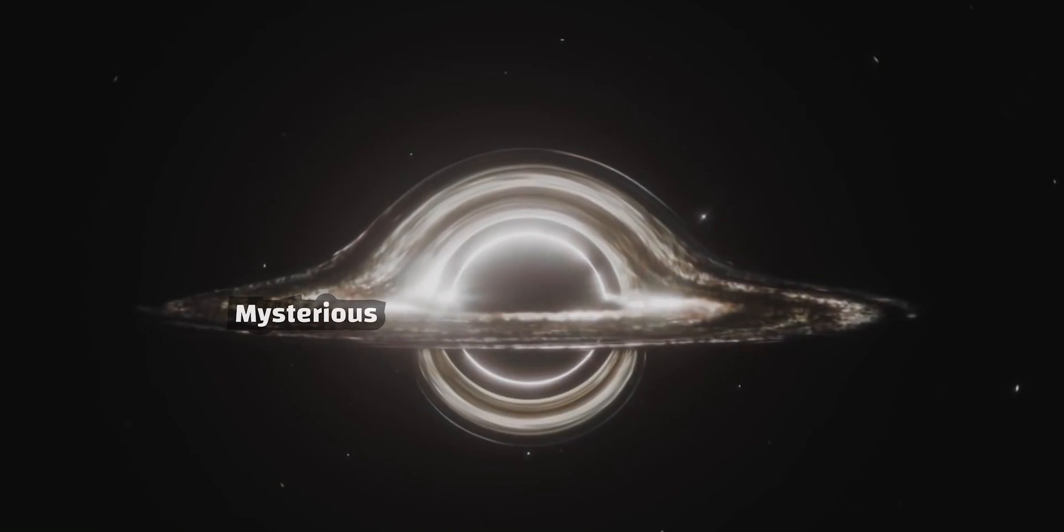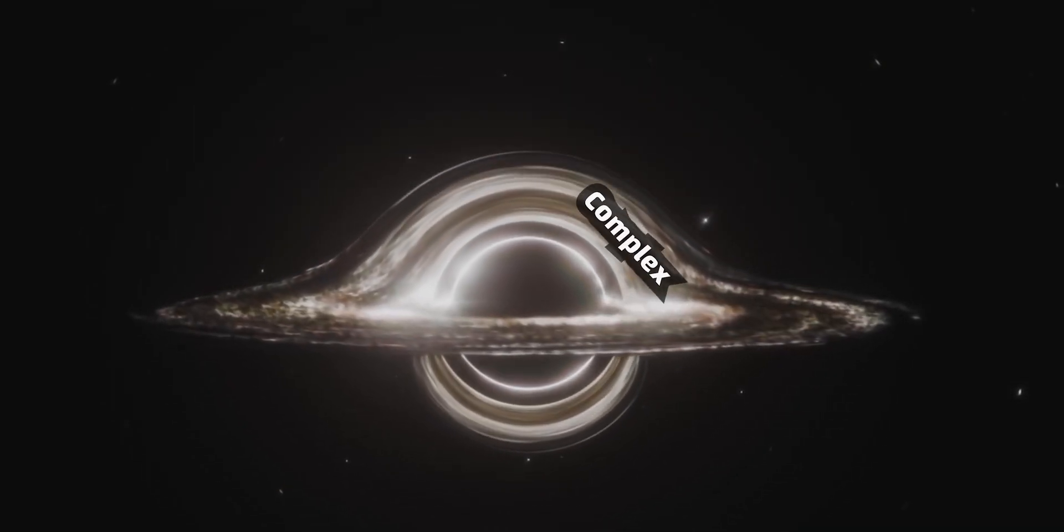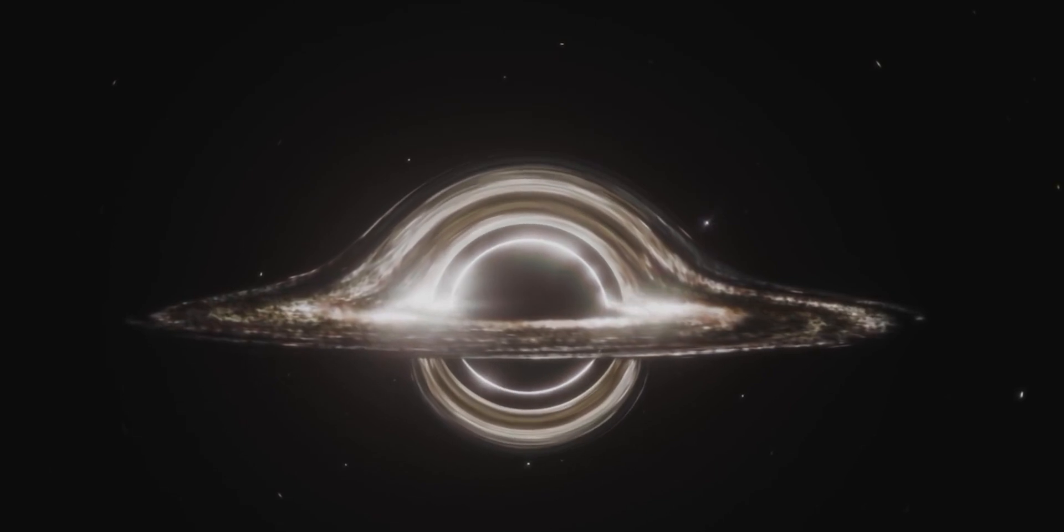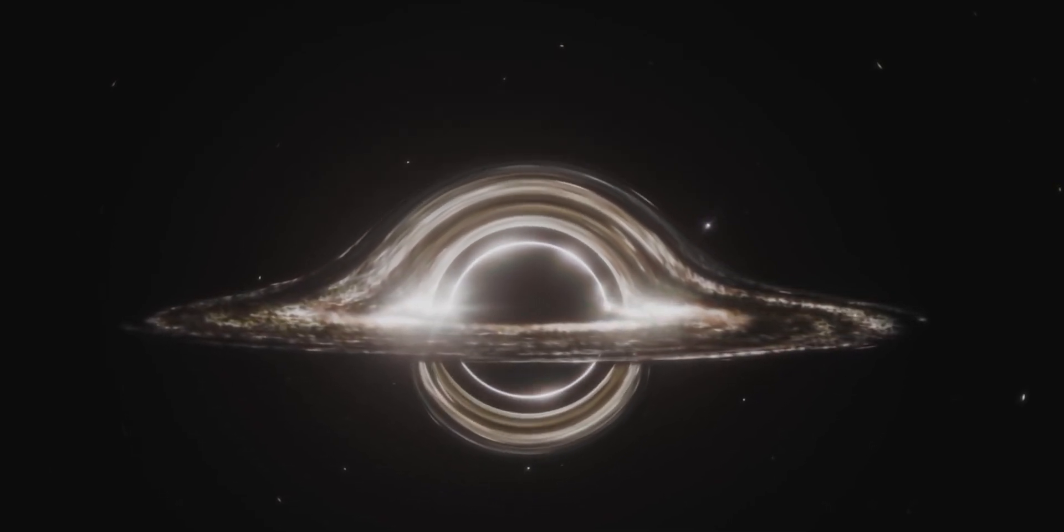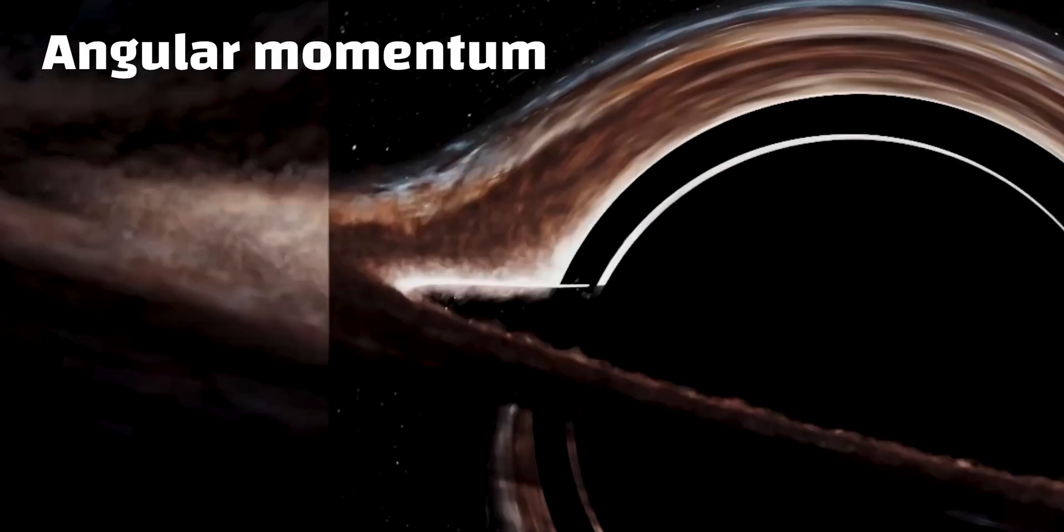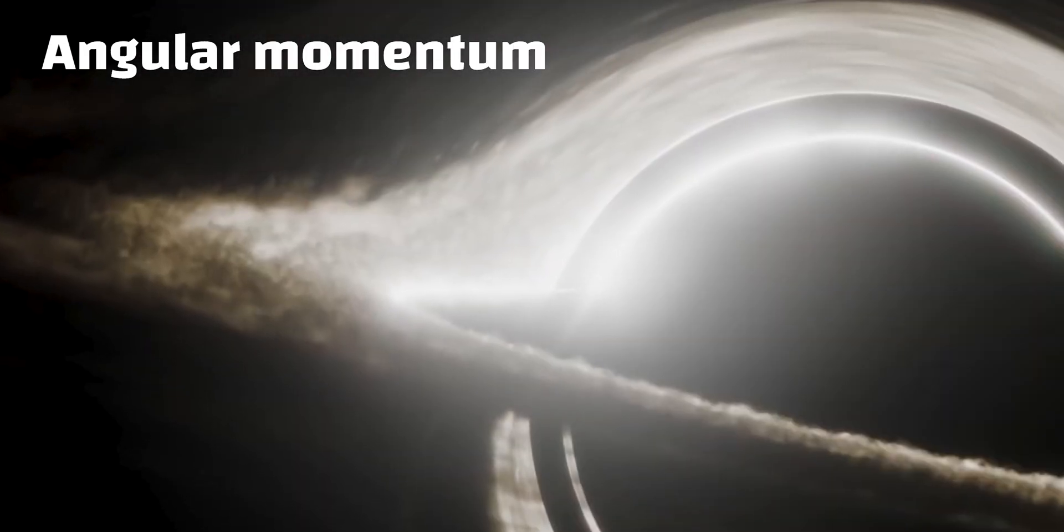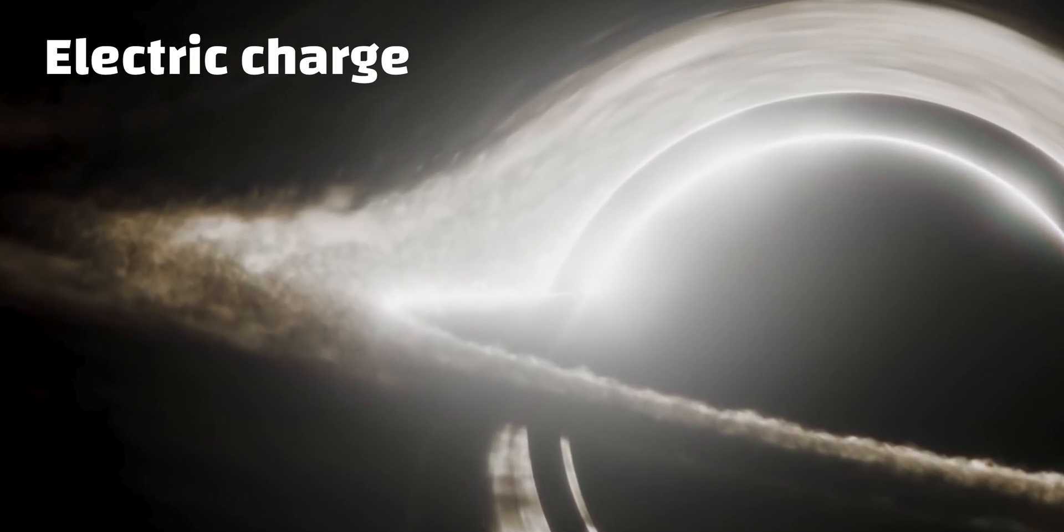Even if they're mysterious and complex, when it comes to their characteristics, they become simple objects. They can be fully characterized by only three quantities: their mass, angular momentum means how fast they spin, and their electric charge.